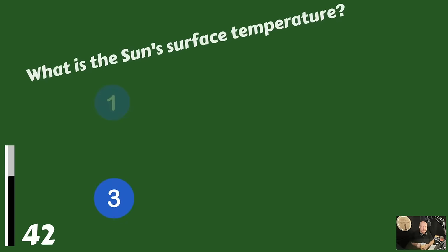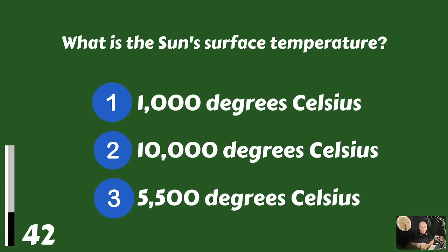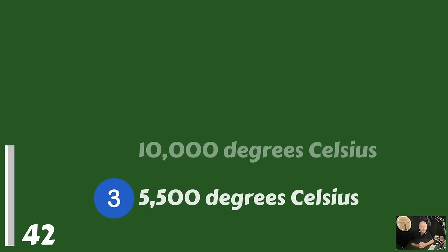What is the sun's surface temperature? One thousand degrees Celsius, ten thousand degrees Celsius, or fifty-five hundred degrees Celsius? The sun's surface temperature is fifty-five hundred degrees Celsius.